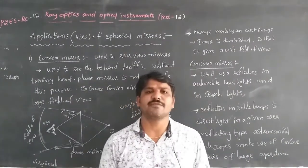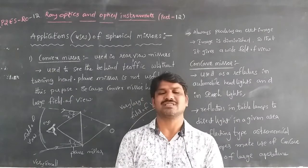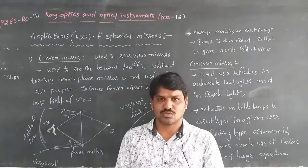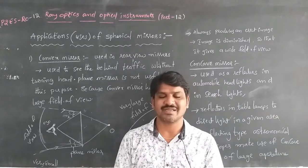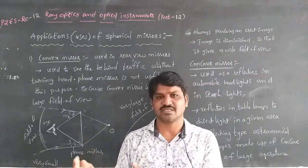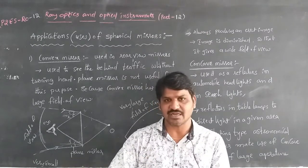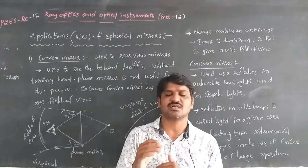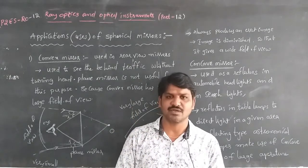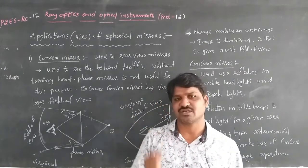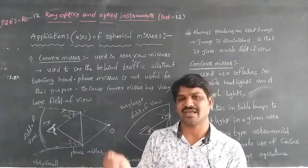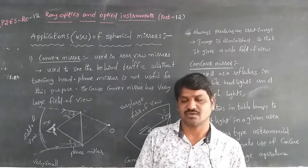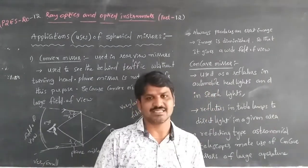Convex mirrors are used in the rear-view and side mirrors of automobiles to see the traffic behind without turning our head. Convex mirrors are used because they have a wide field of view — a large field of view — and this helps us avoid accidents.